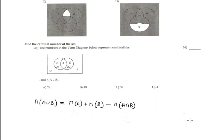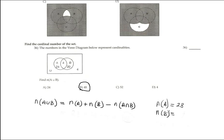Problem 36 uses the cardinality formula. The numbers in the diagram represent cardinality. To find |A∪B|: cardinality of A is 24+4=28, cardinality of B is 20+4=24, and the intersection is just 4. Using the formula: |A∪B| = 28 + 24 − 4 = 48. This gives option B.